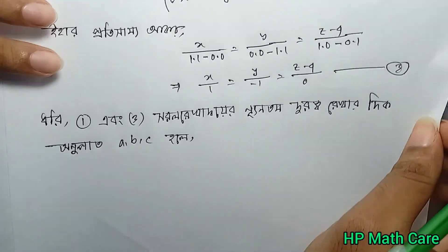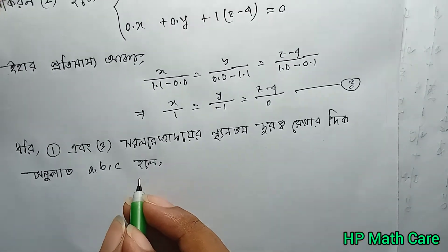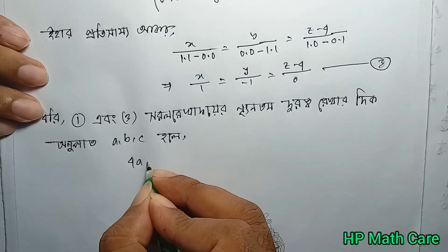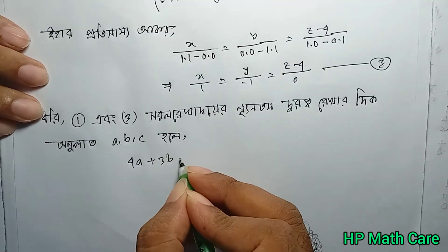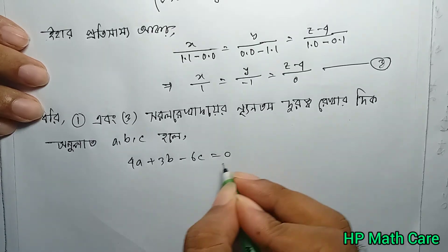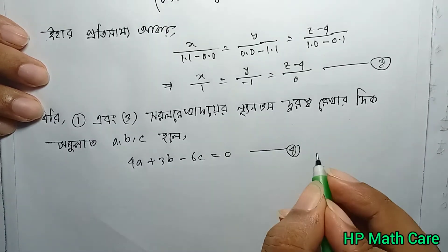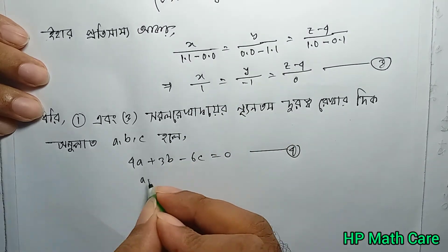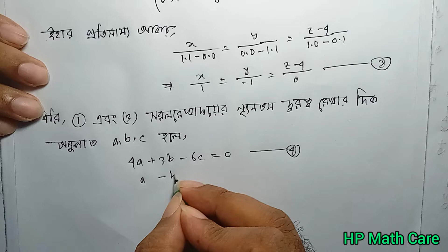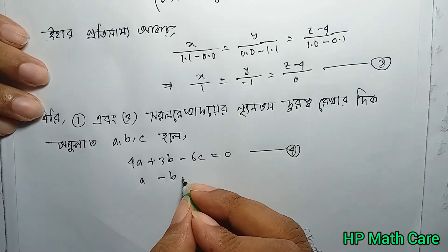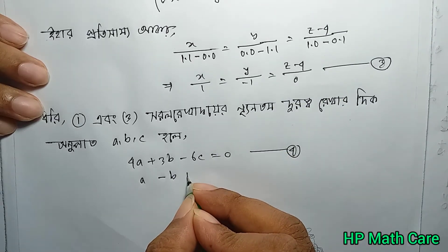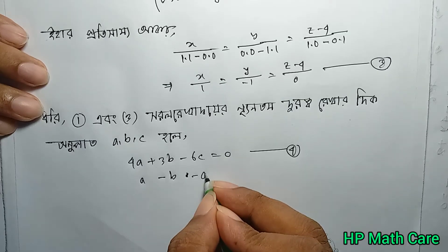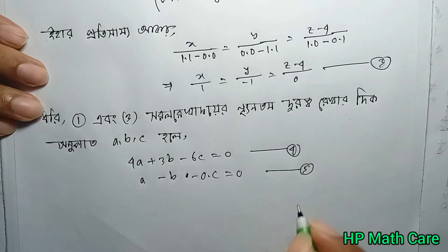The equation becomes: a plus 3b minus 6c equals zero. Then minus b plus 2c, and zero into c, gives us the relationship between the direction ratios.